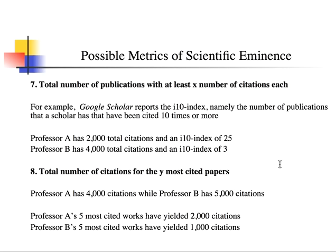Number eight is the total number of citations for your Y most cited papers. Even if you have a hundred publications, on a grant application they often ask you to list your five most important works. Your five most important works might correspond to your five most cited papers — though not always, since sometimes it takes a while for a paper to get sufficiently cited. This is a quick way to gauge how influential your most important work was.